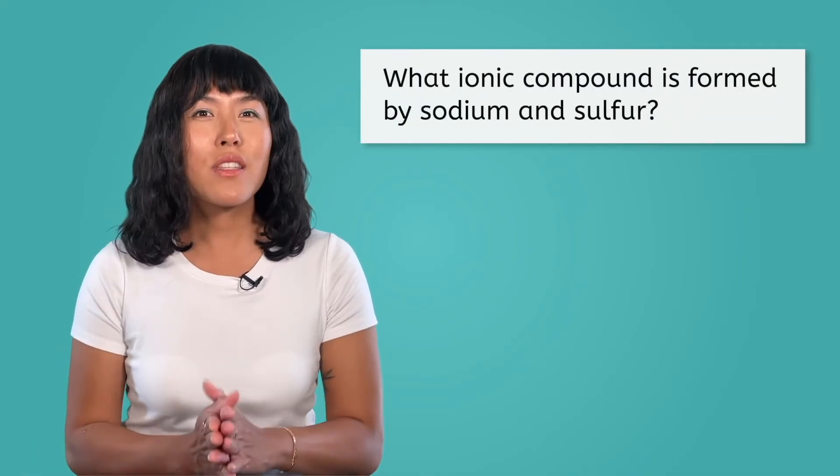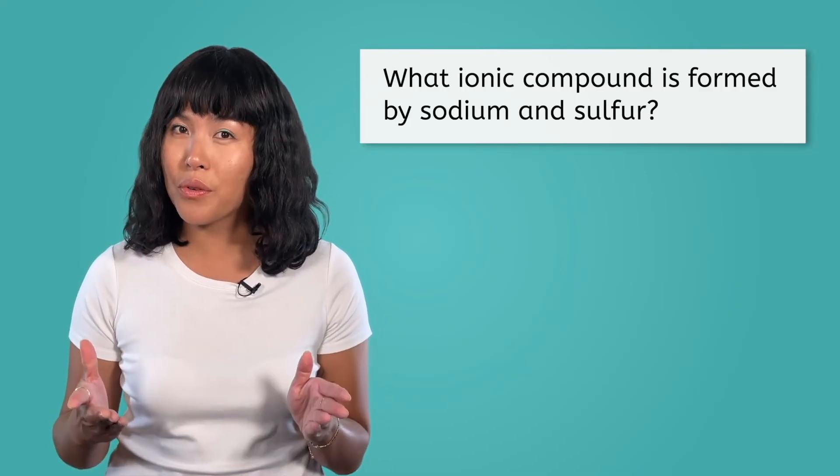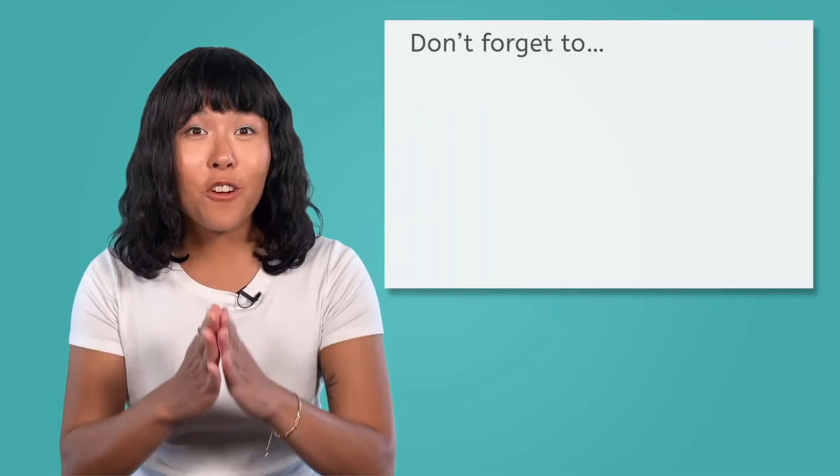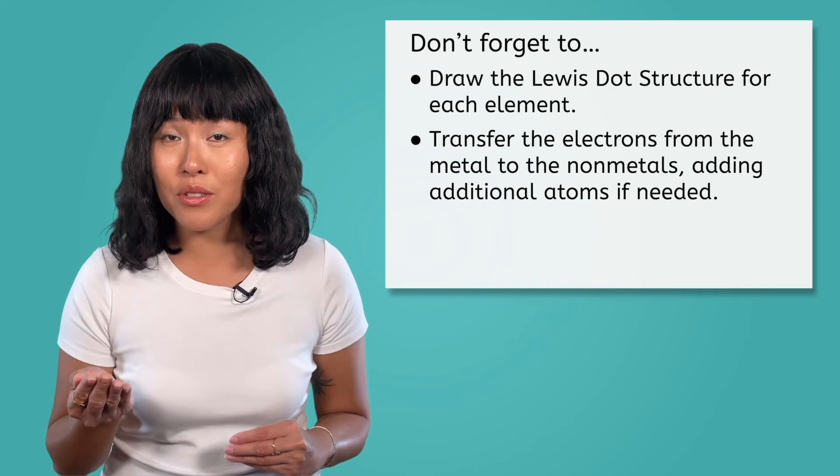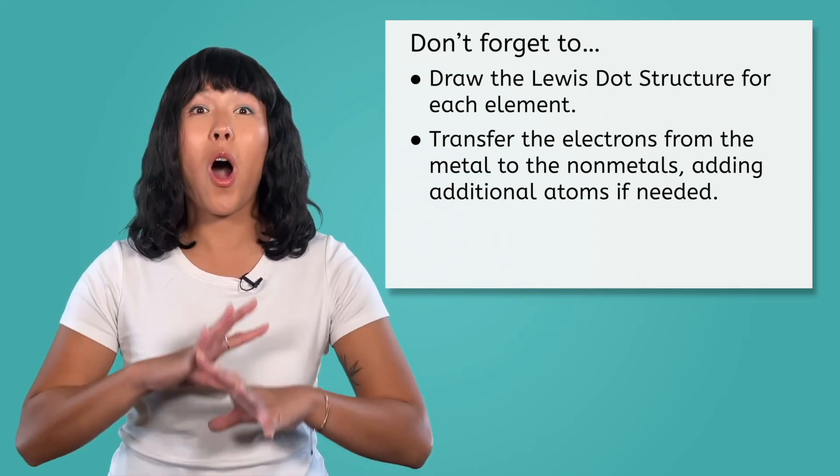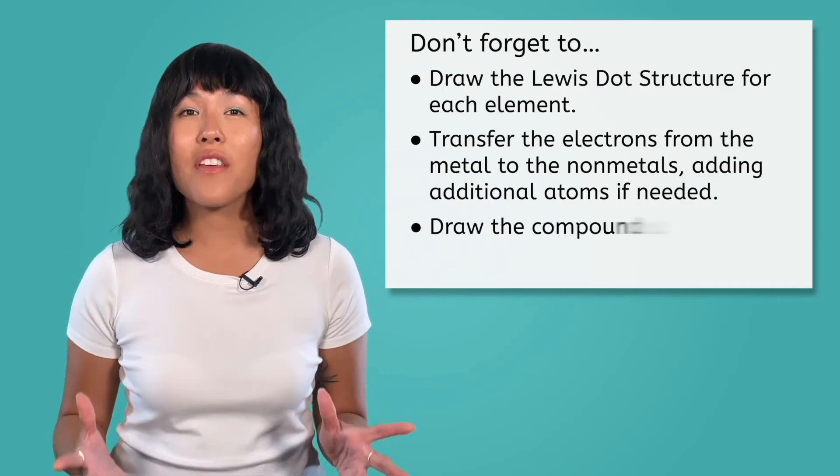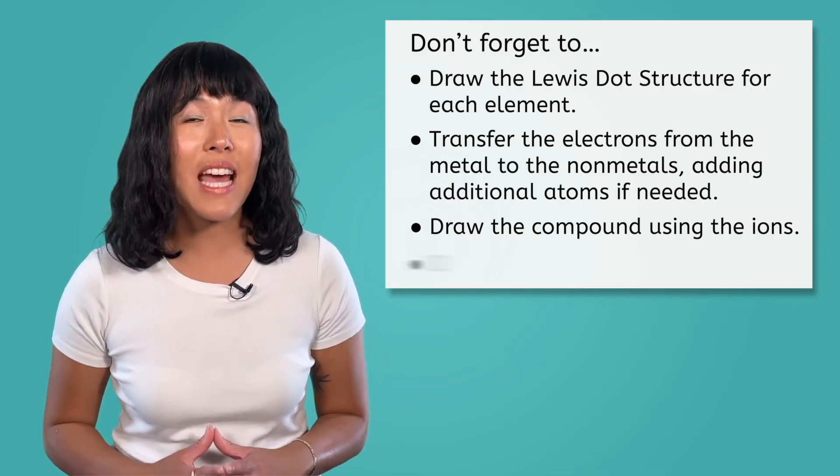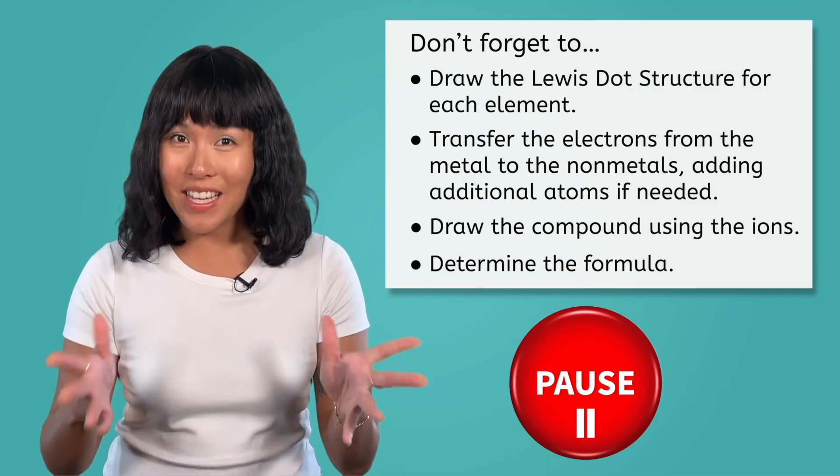I think you might be ready to try one on your own. What do you think? What is the formula for the ionic compound formed between sodium and sulfur? Remember, first draw the Lewis dot structures, then transfer the electrons from the metal to the non-metal, adding any atoms necessary until all atoms have a full valence shell. Finally, draw the compound using the ions and determine the formula for the compound. Okay, pause the video and give it a try!